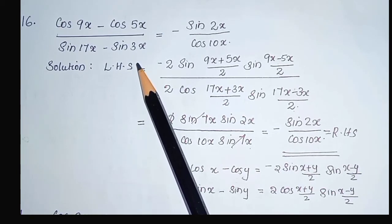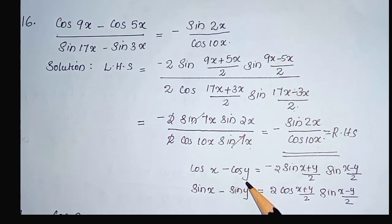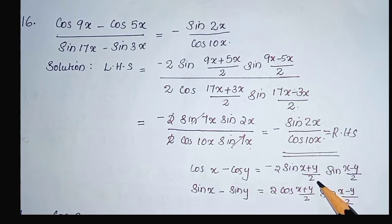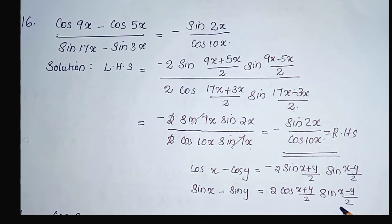We have the identity for cos x minus cos y and sin x minus sin y. Cos x minus cos y equal to minus 2 sin((x+y)/2) sin((x-y)/2), and sin x minus sin y equal to 2 cos((x+y)/2) sin((x-y)/2). We can use these identities for solving this.